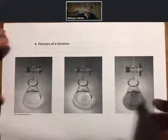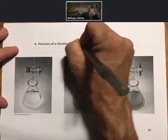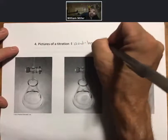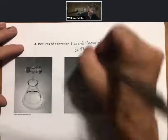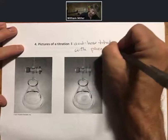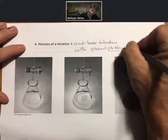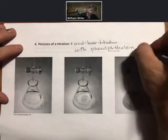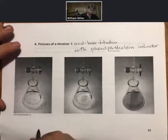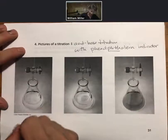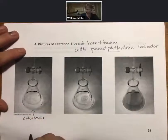Pictures of a titration. Here we have an acid-base titration with phenolphthalein indicator. Phenolphthalein has the famous PHTH construction, silent PH there. This is colorless, which means the solution is acidic.